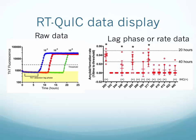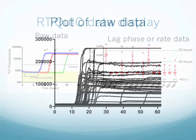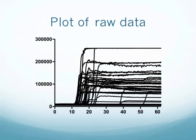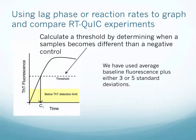You can see both types of graphs depicted here, where on the left-hand side you have the raw thioflavin T traces, and on the right we have reaction rate data, which has significantly more data points without looking as cluttered. If we were to look at all of the points on the right-hand graph in a raw data plot, there's just no way to interpret which line is which. In order to visualize a large amount of data, we like to use that reaction rate value.